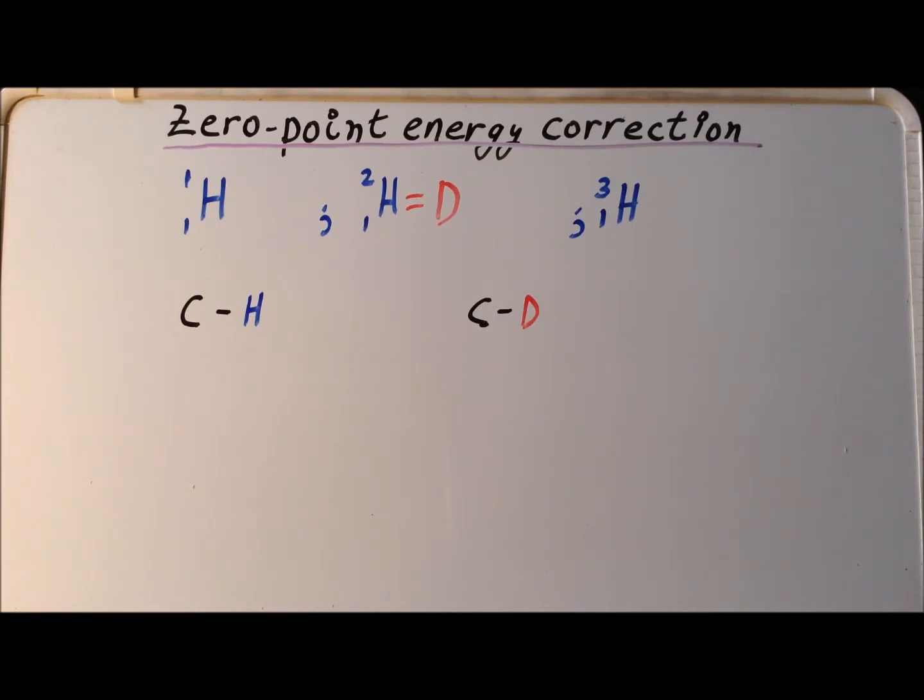It turns out, for reasons which we will discuss in the rest of the video, that it is easier to break a carbon-hydrogen bond than it is to break a carbon-deuterium bond, even though the elements involved are both carbon and hydrogen. Why would we care about this? Well, if we have a particular bond and we measure the rate of reaction when we have ordinary hydrogen, and we see that the rate changes when we replace the hydrogen with deuterium, it tells us that breaking that carbon-hydrogen bond is the rate-determining step.